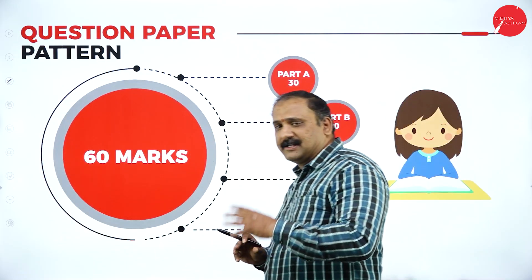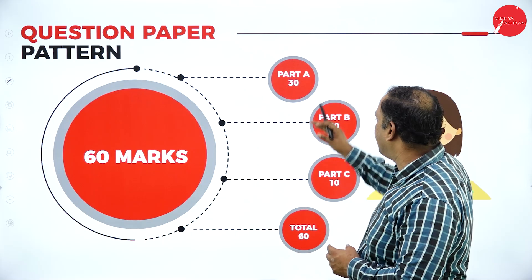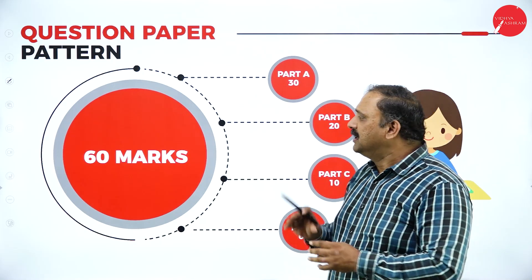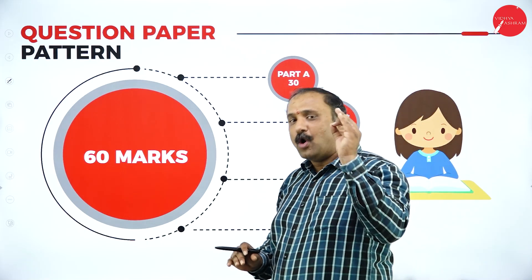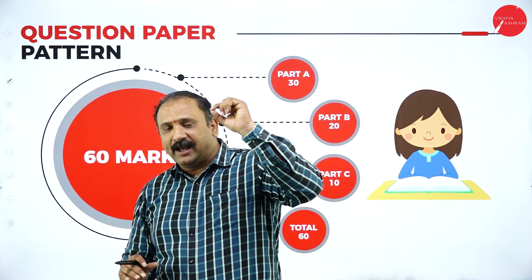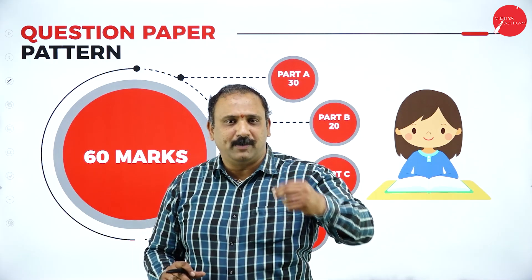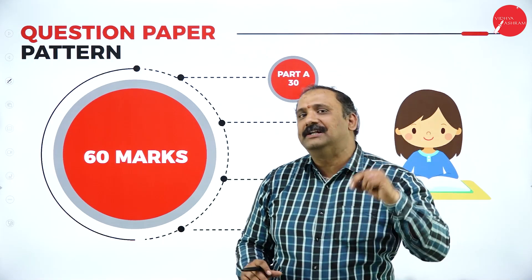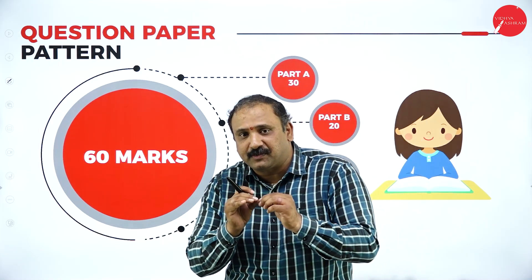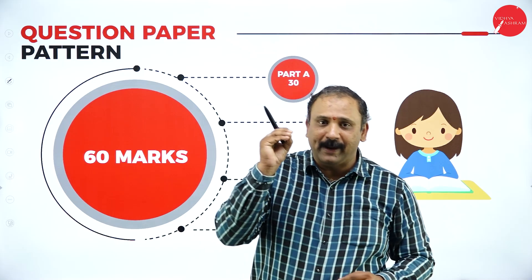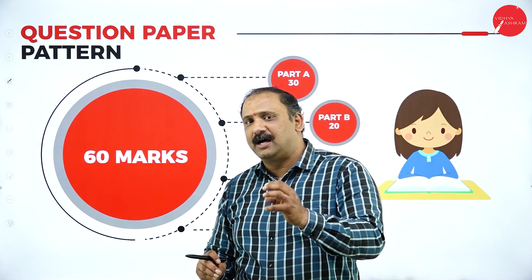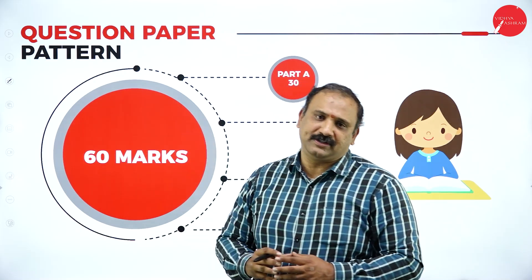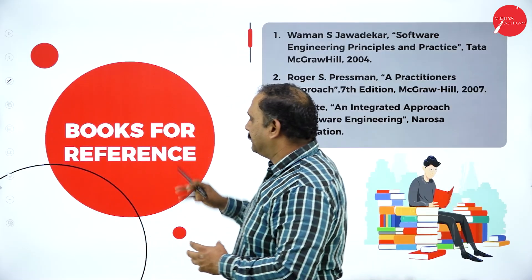The question paper pattern under NEP is 60 marks total: Part A is 30, Part B is 20, and Part C is 10. These 60 marks are quite achievable — pay attention to your 1-mark and 2-mark questions as well as long answers. This is a concept-oriented paper, so if your concepts are strong and supported with good examples, you can definitely score well.